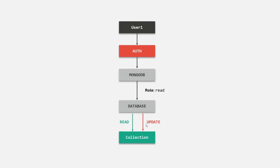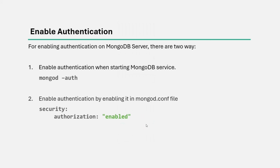Now, how do we enable authentication and authorization in MongoDB server? There are two ways. First, when starting the MongoDB service using the mongod command, we can add the flag --auth, and it will enable authentication on that MongoDB server. Another way is by enabling authorization in the configuration file of mongod — simply set authorization to enabled. When enabled, a user will first have to authenticate themselves in order to access the MongoDB server, and then they can perform actions based on their roles. A user authenticates by providing their user ID and password.